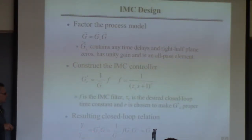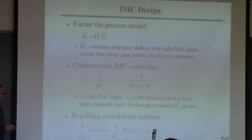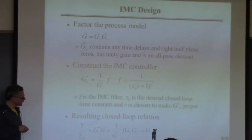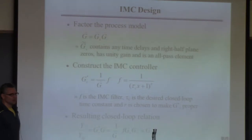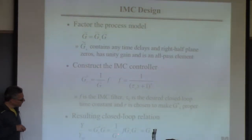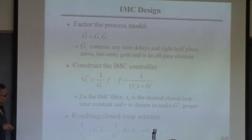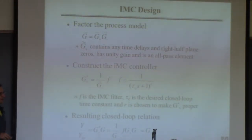What's my GC star? My GC star is one over G_minus times F. I factored G into a G_plus and a G_minus. So you can see what the controller does: it cancels the stuff you can cancel — it cancels the G_minus stuff and just leaves G_plus there. After this cancels, you rewrite it and it looks like this.